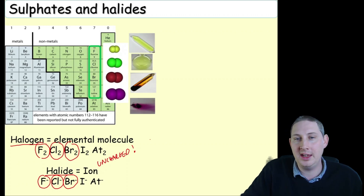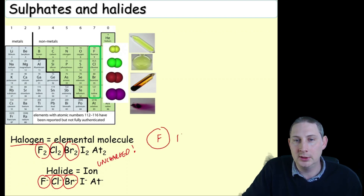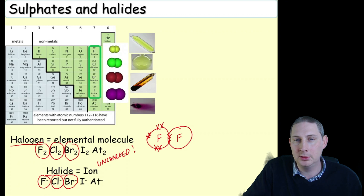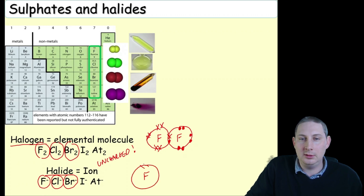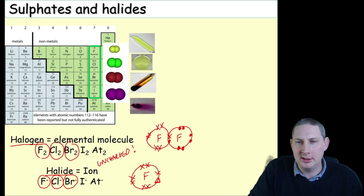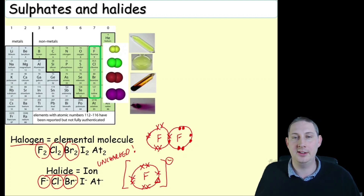Why are the halogens diatomic? If you think about it, it's so they have a full outer shell — for example, fluorine pairs up to achieve a full shell. Why don't halides need to be diatomic? Once fluorine has reacted with a metal it's got an extra electron already, so it's perfectly happy going around as a negatively charged ion with a full outer shell.